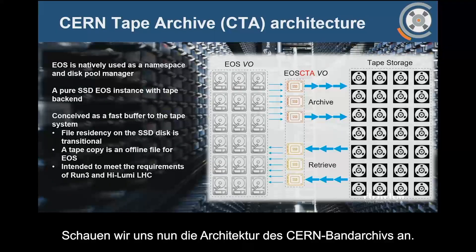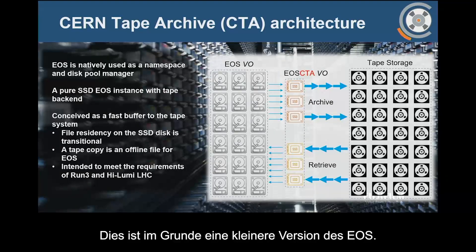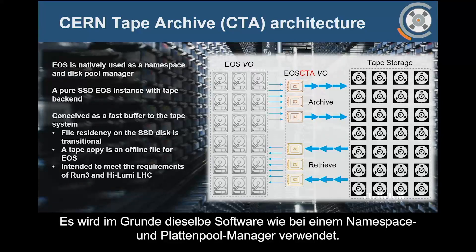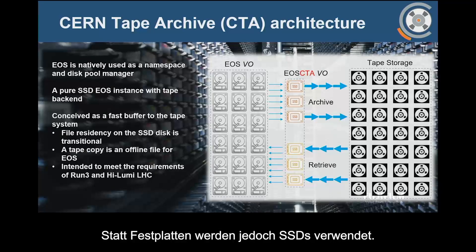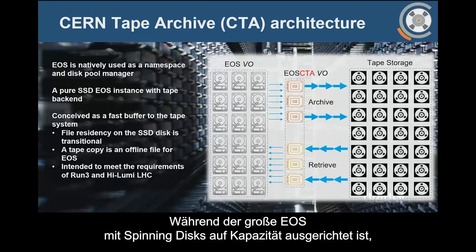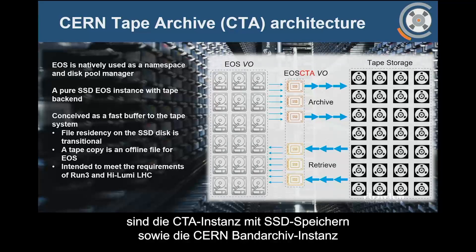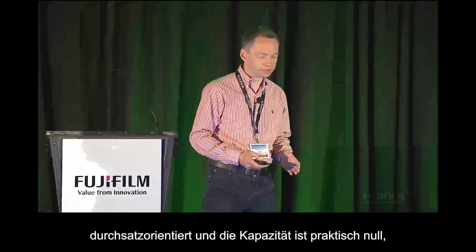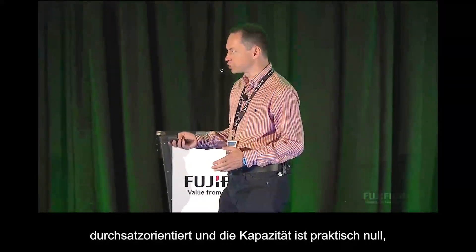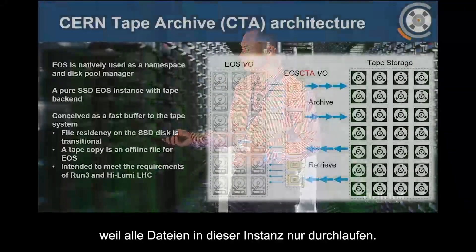Let's now have a look at the CERN Tape Archive architecture. This is basically a smaller instance of EOS, using the same software as a namespace and disk pool manager. However, instead of spinning disks, it's using SSDs. While the big EOS with spinning disk is capacity oriented and bandwidth is a byproduct, the SSD-based CERN Tape Archive instance is really throughput oriented, with essentially zero capacity because all files are just transitioning through this instance.